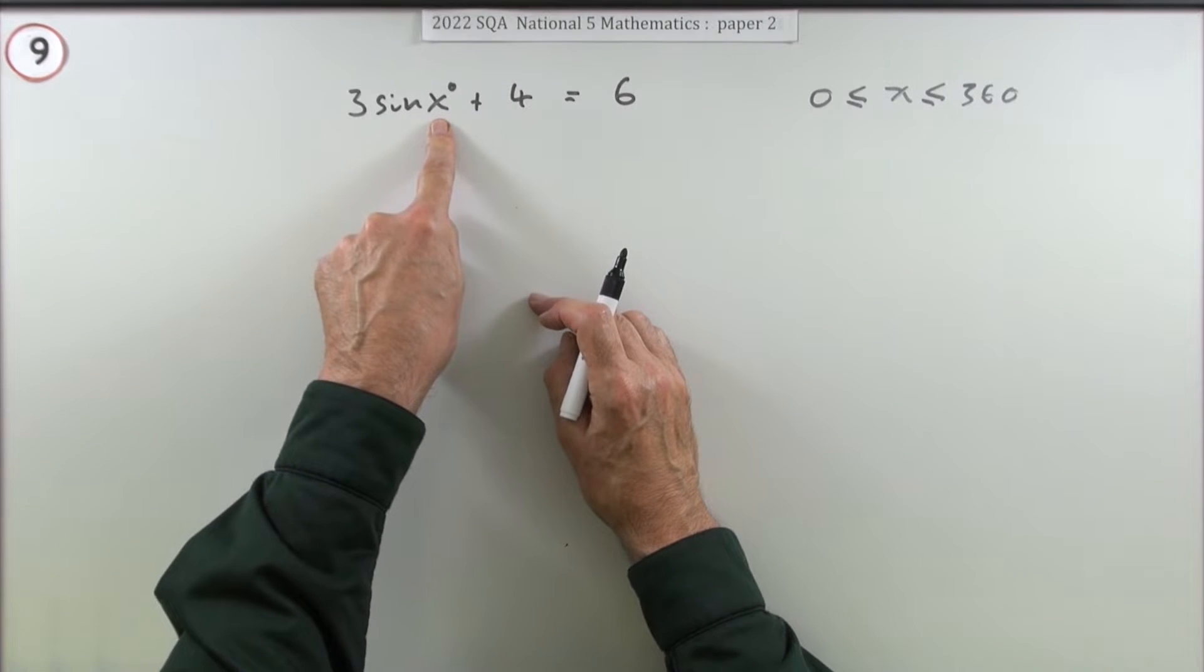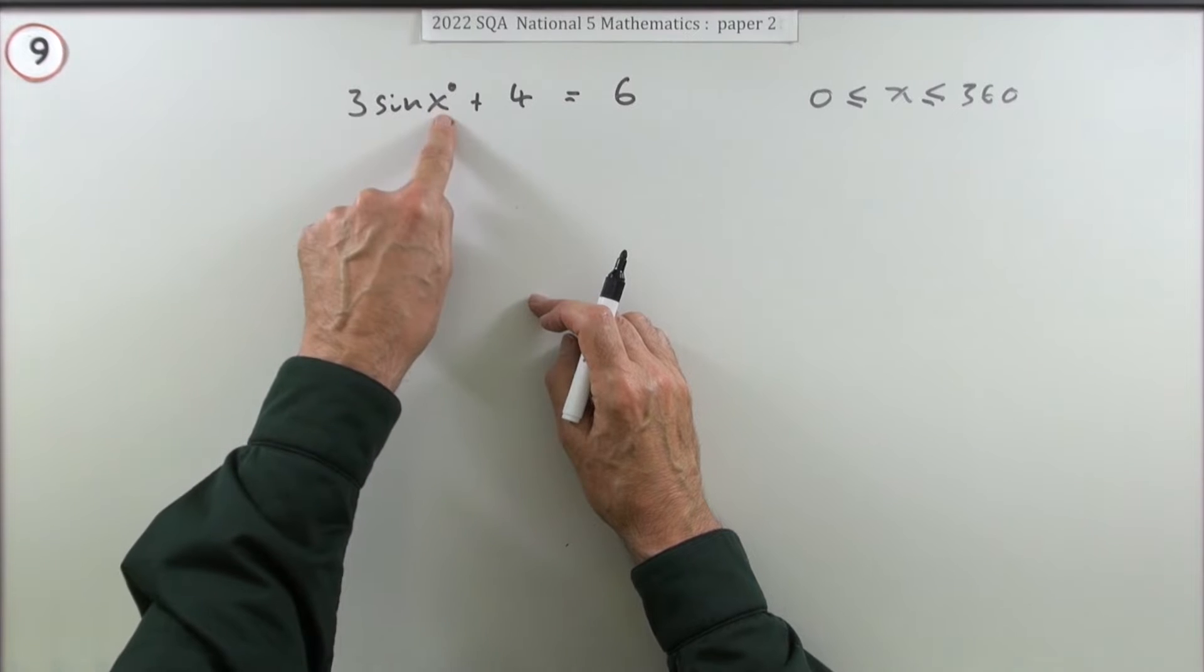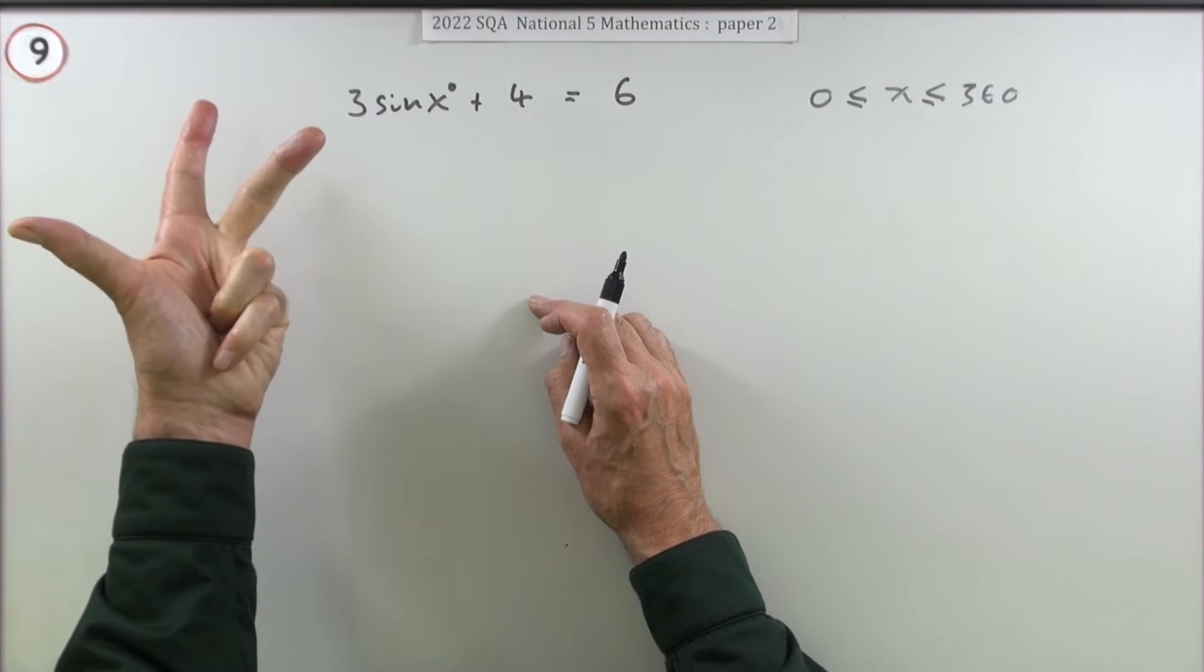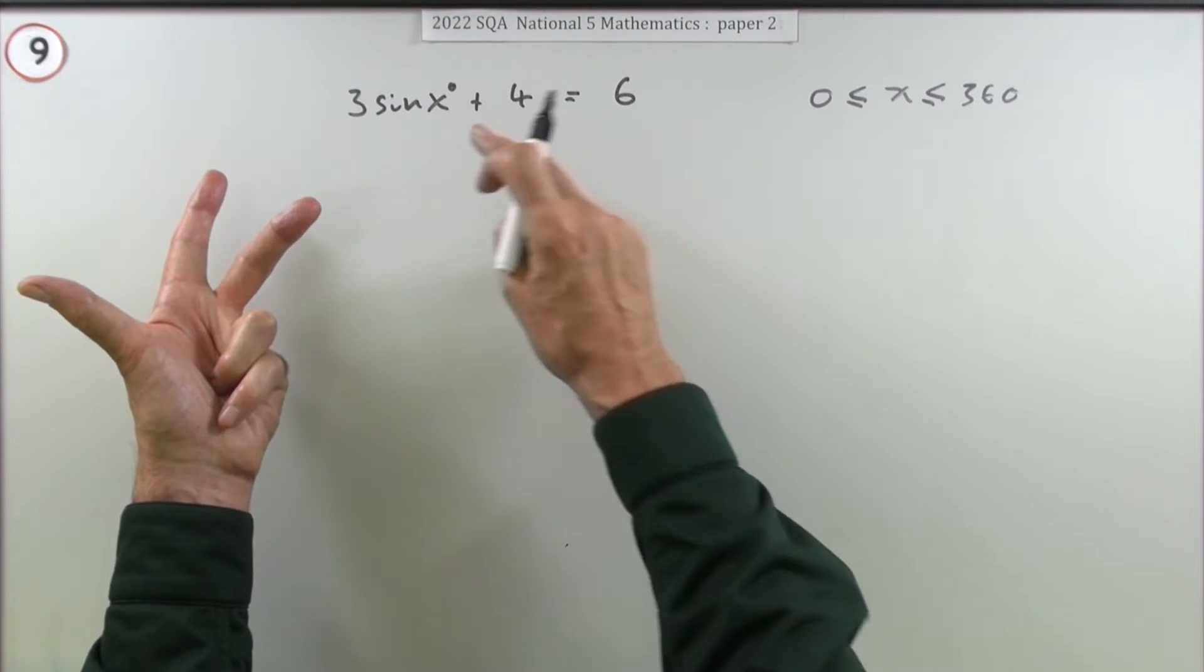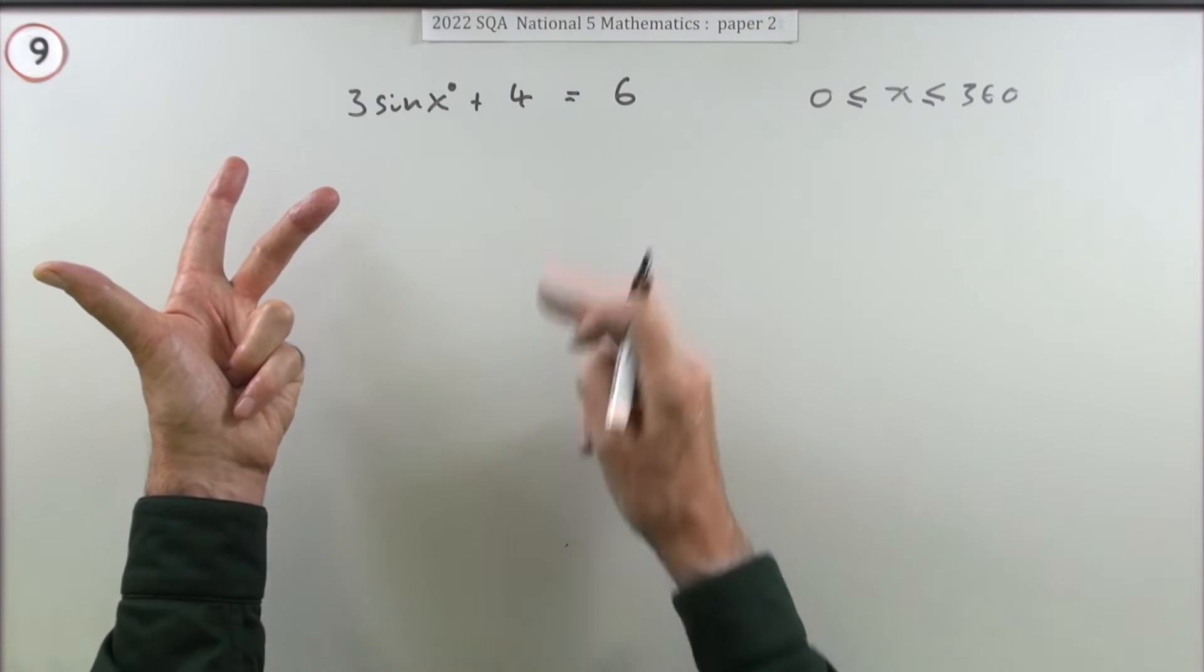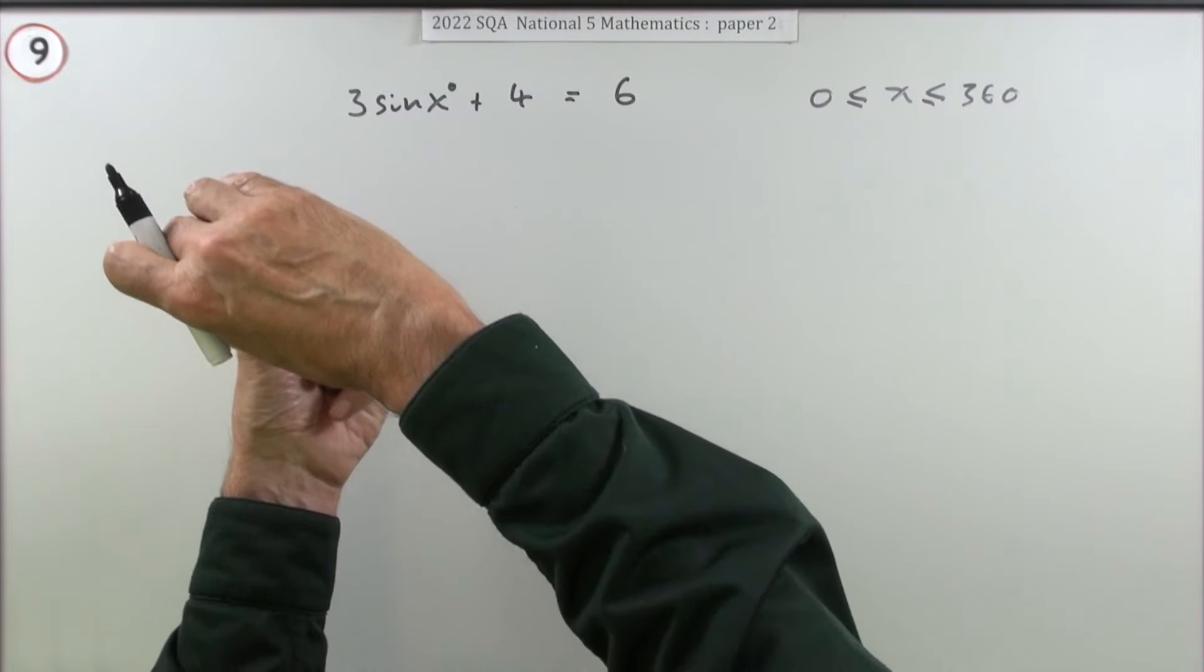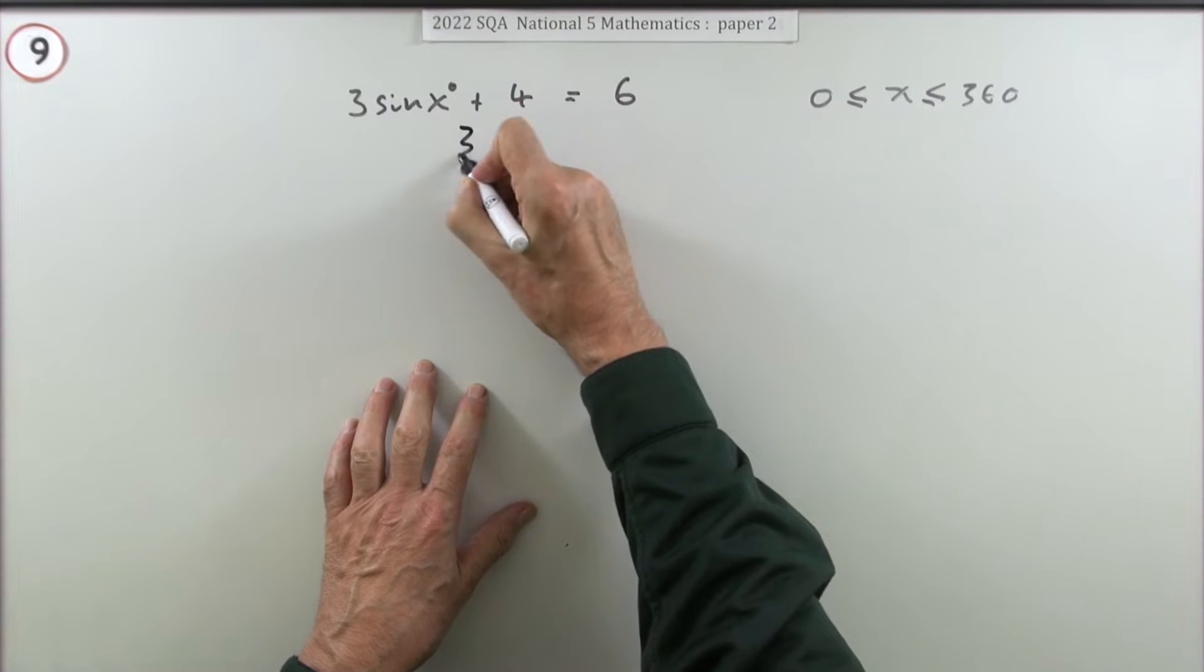If you were starting with x and wanted to evaluate this, you'd find the sine of it, multiply it by three, then add on four. So to get back to x, you'll have to undo them in reverse order: take away the four, divide by three, and finally do inverse sine.